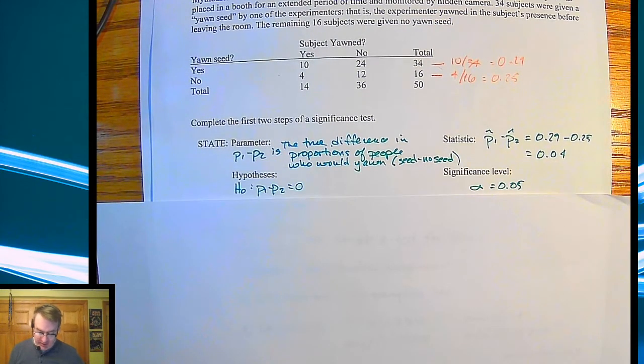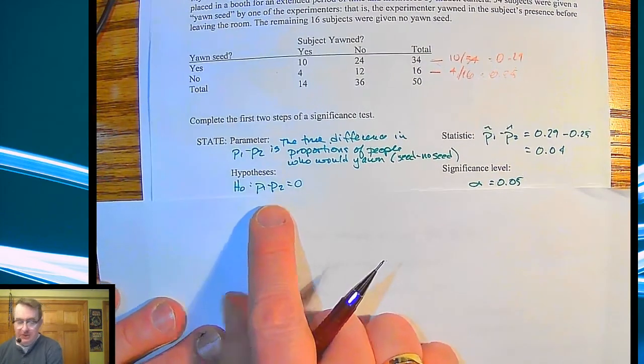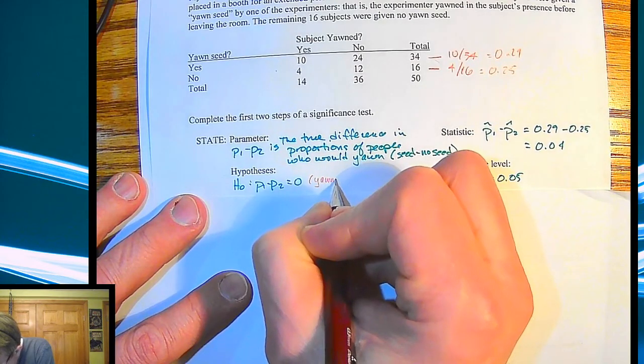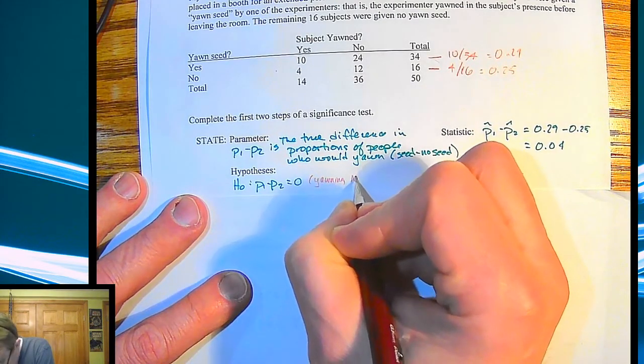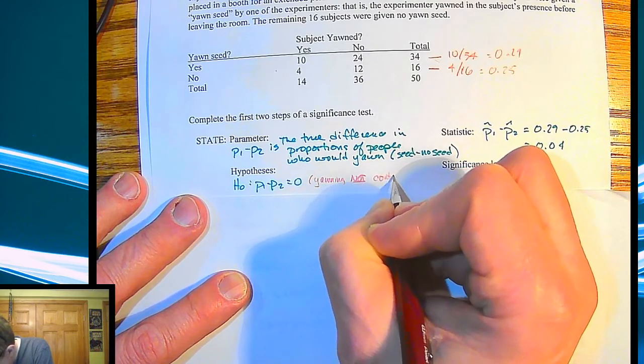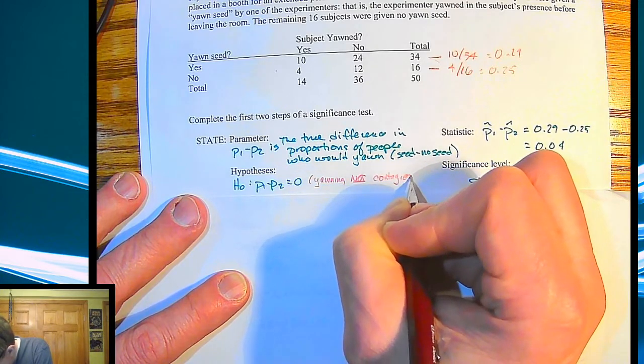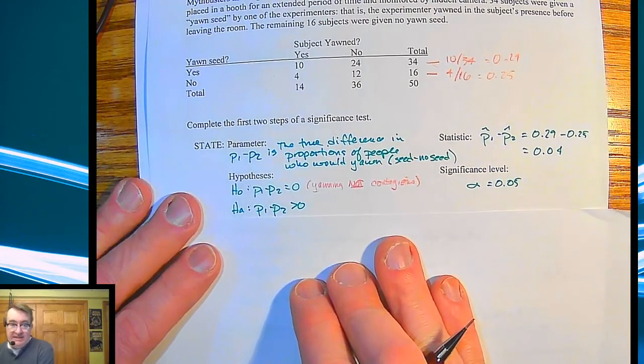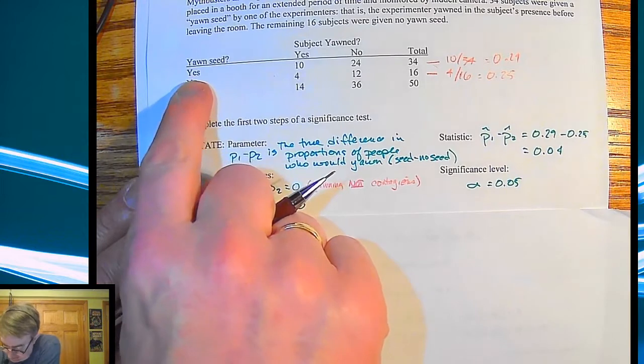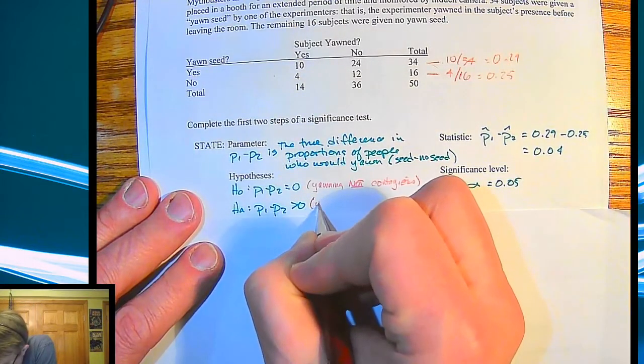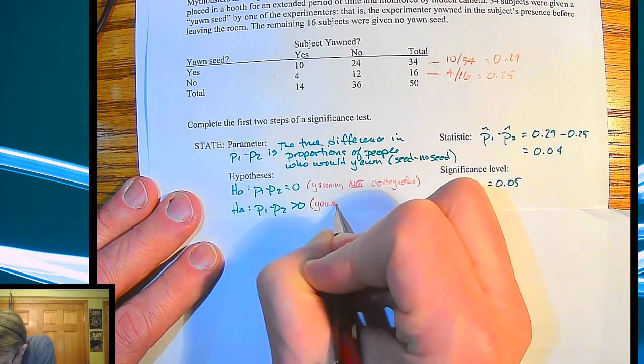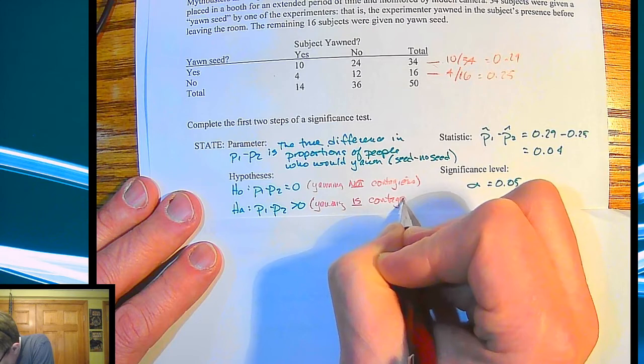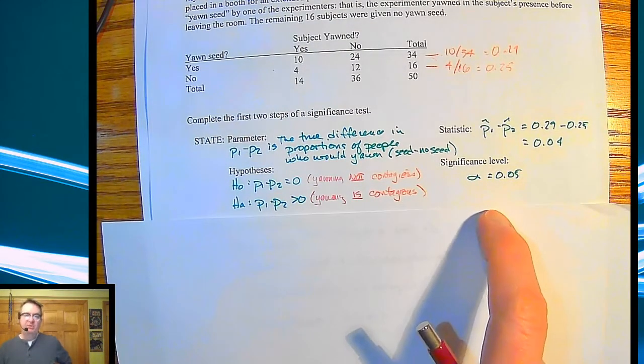And then in terms of the hypotheses, the null hypothesis we're going to say is that P1 minus P2 is equal to 0. This means that yawning is not contagious. And then we're going to say P1 minus P2 is bigger than 0. Yawning is contagious because that's what we saw. The seed gave more than the non-seed. So yawning is contagious. And our significance level is 5%.